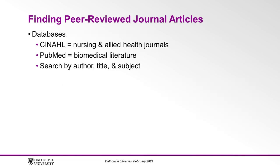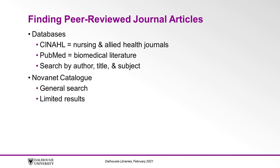You can find peer-reviewed journal articles in a number of places. Databases like CINAHL for Nursing and Allied Health Journals and PubMed for Biomedical Literature allow you to search by author, title, and most commonly by subject. Our online catalog does allow you to do a general search for articles, but keep in mind that the results you get will be more limited than if you went to a specific database.